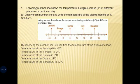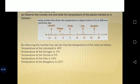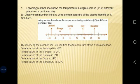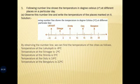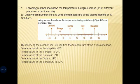Lahulspiti comes second from the left side. Temperature at Srinagar is minus 2 degree Celsius. Temperature at Shimla is 5 degree Celsius — it comes after 0. Temperature at Ooty is 14 degree Celsius, between 10 and 15. Temperature at Bengaluru is 22 degree Celsius. By observing this chart we can say some integers are negative and some are positive.